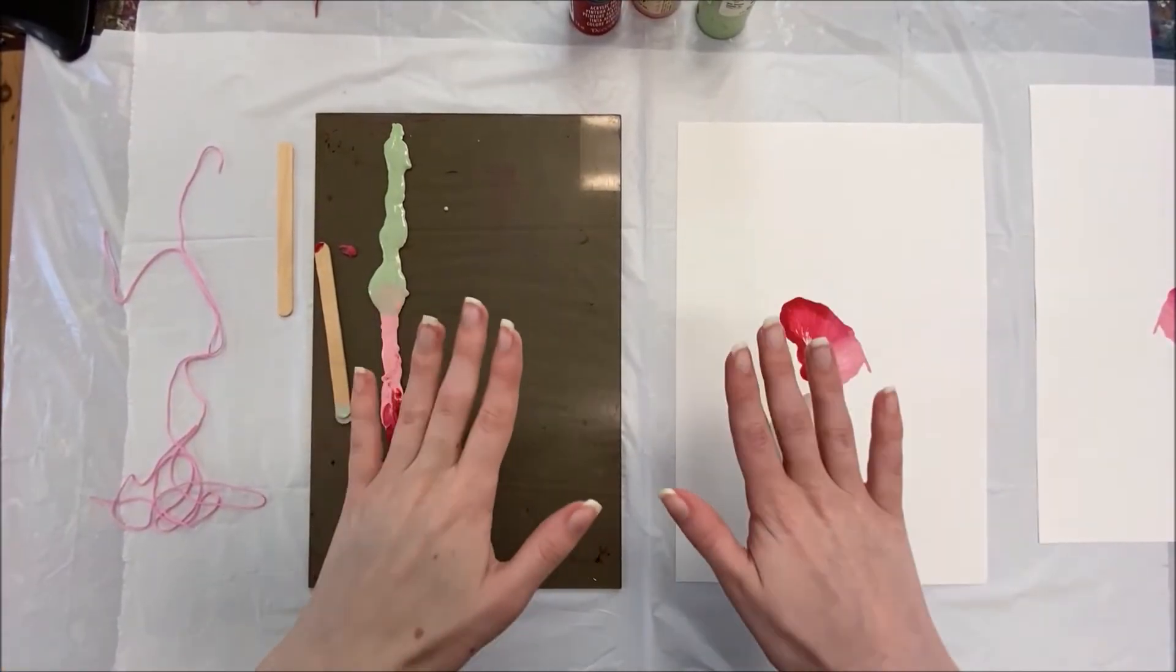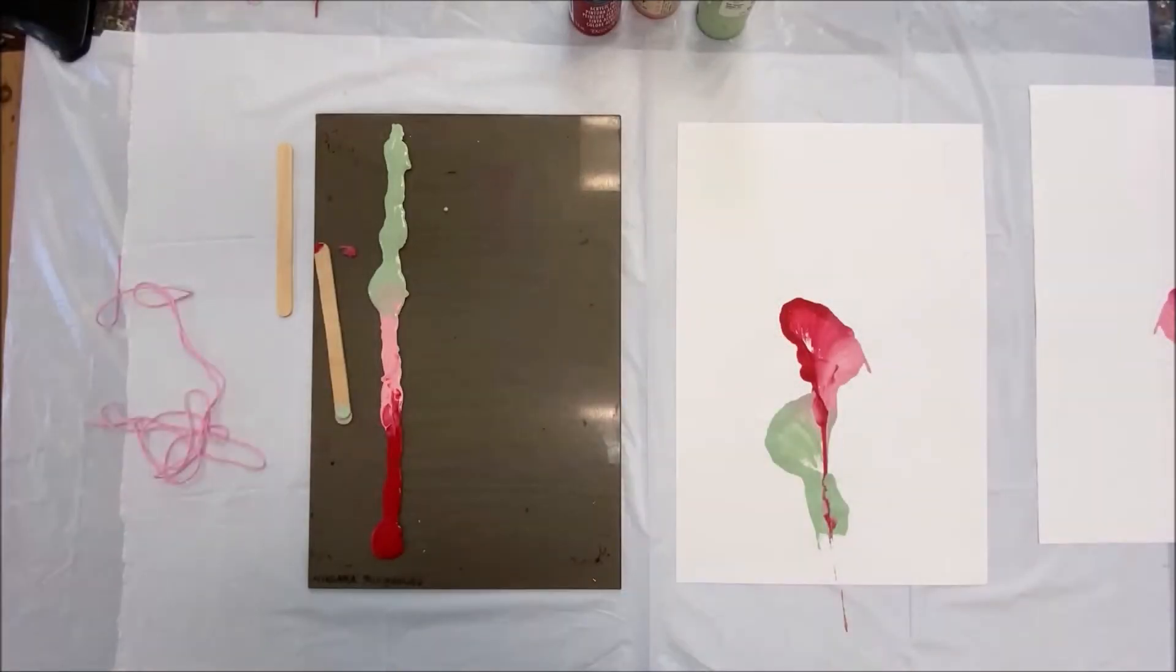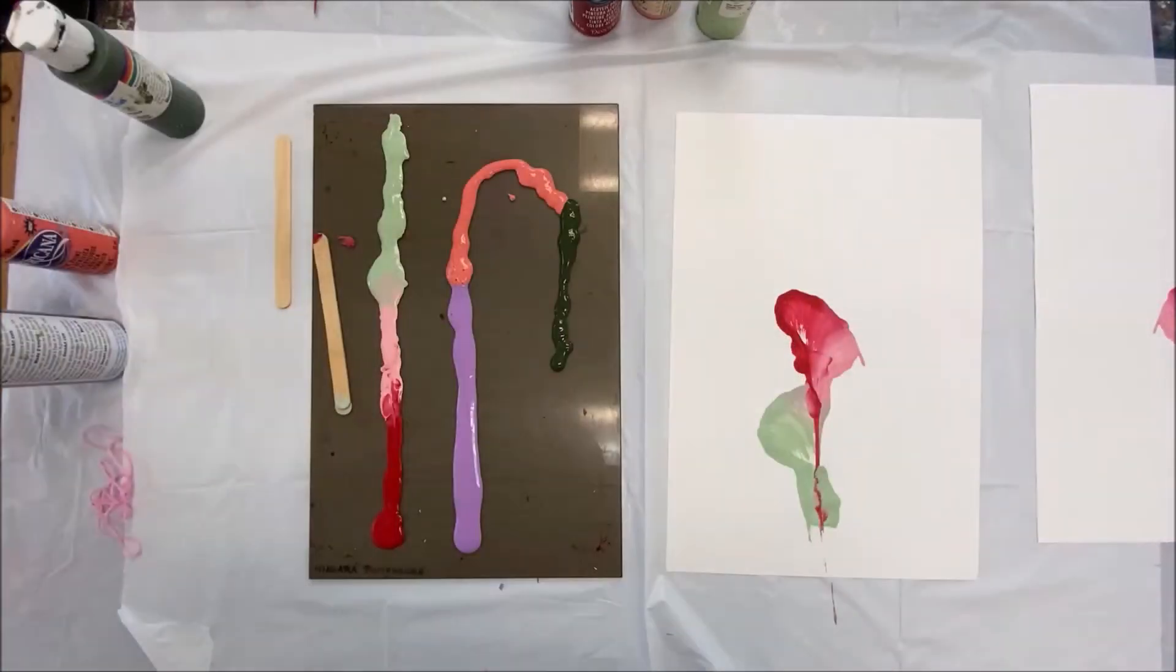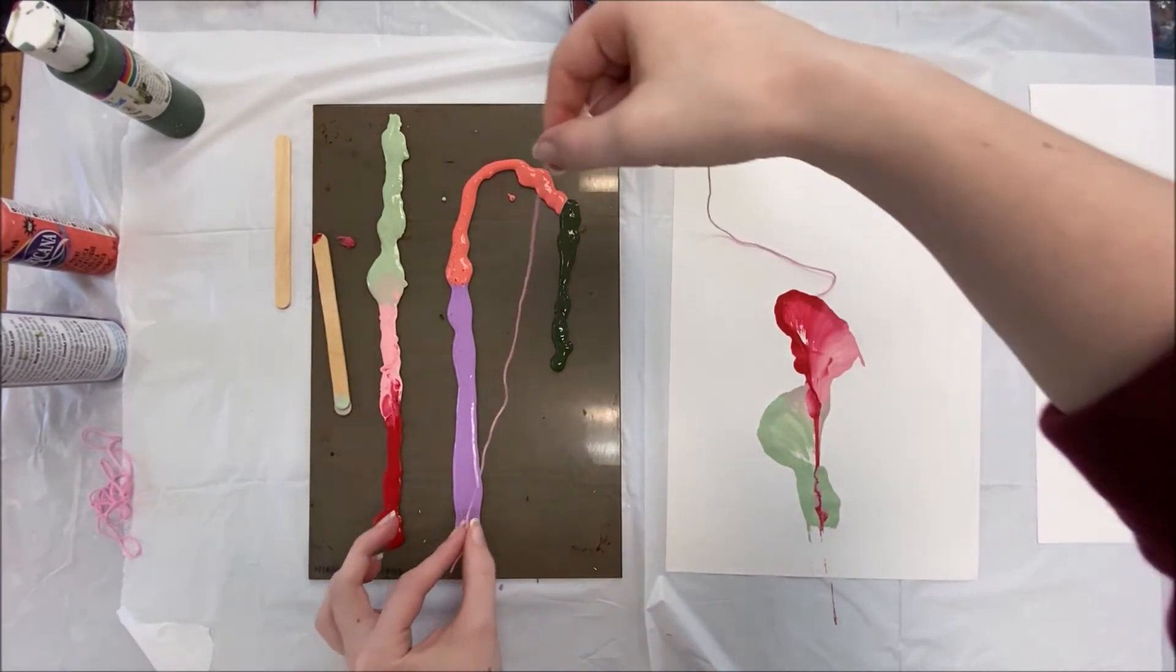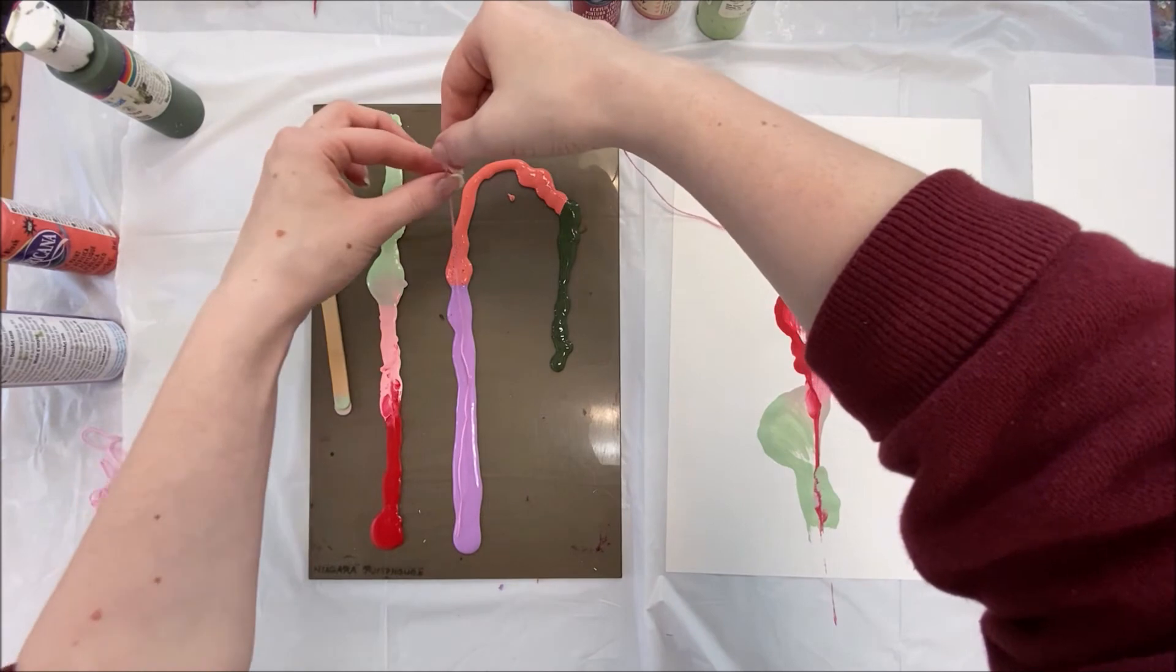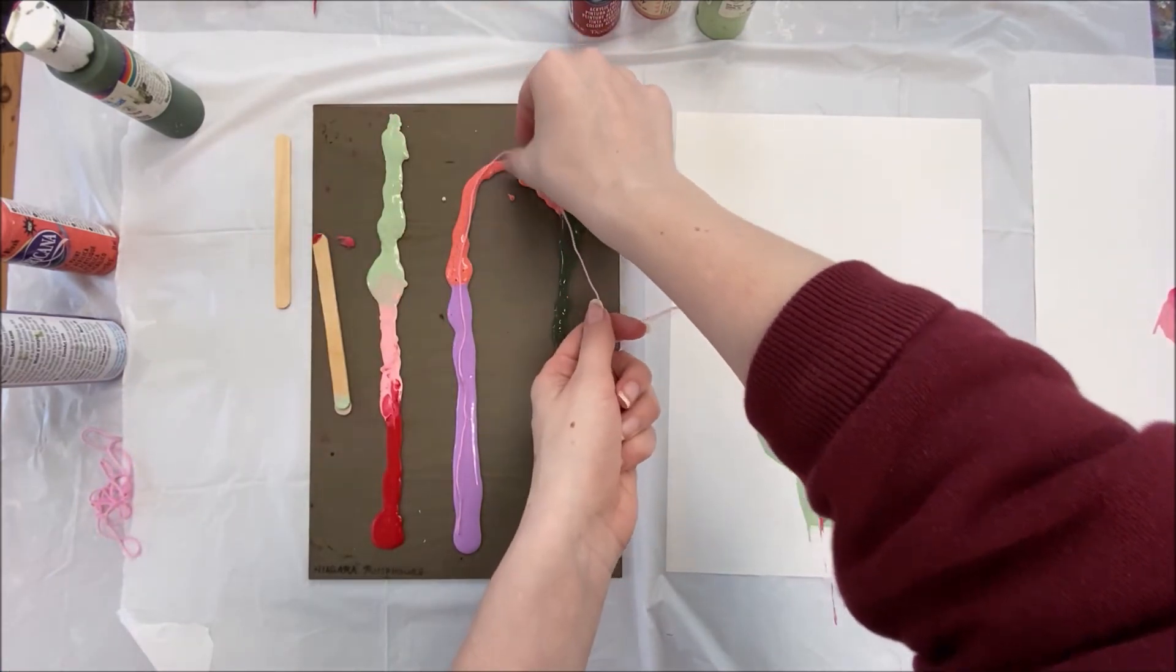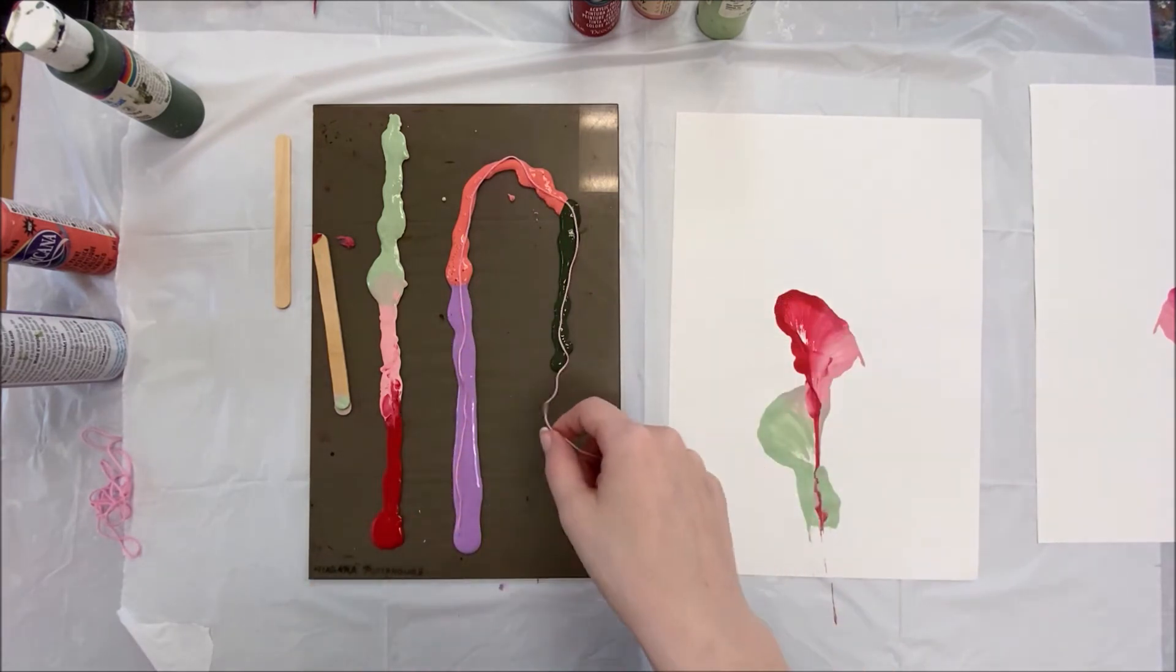Now we're going to repeat these instructions to make two more flowers. You can use different colors of paint, different lengths of string. For these next two flowers, I'm using three new colors of paint. We're going to do the same thing, layer our string, and then cover it.